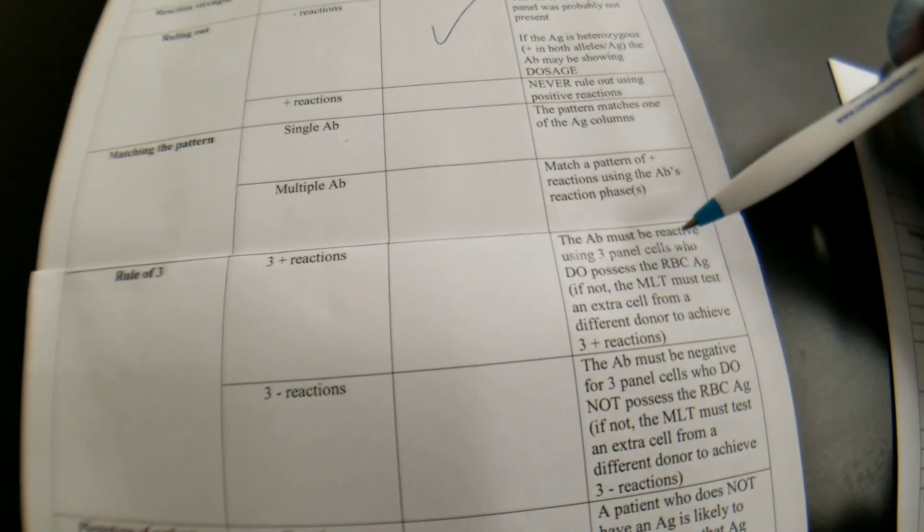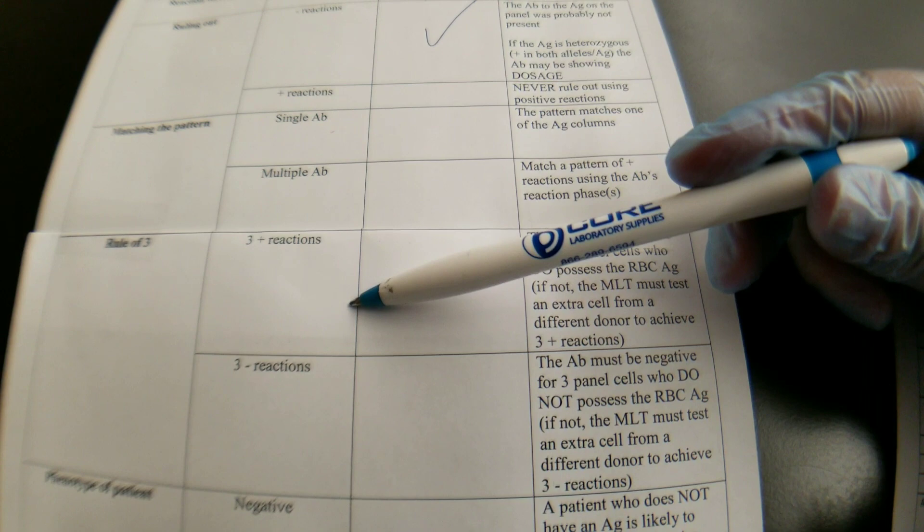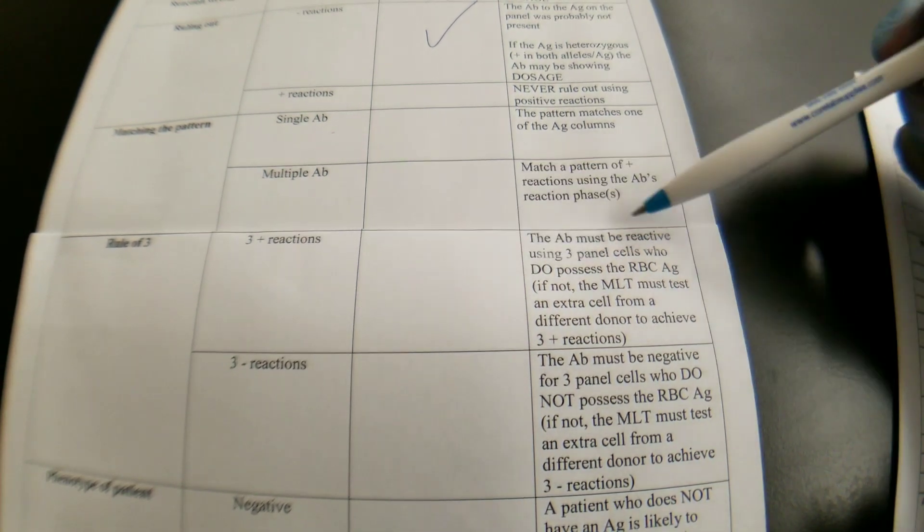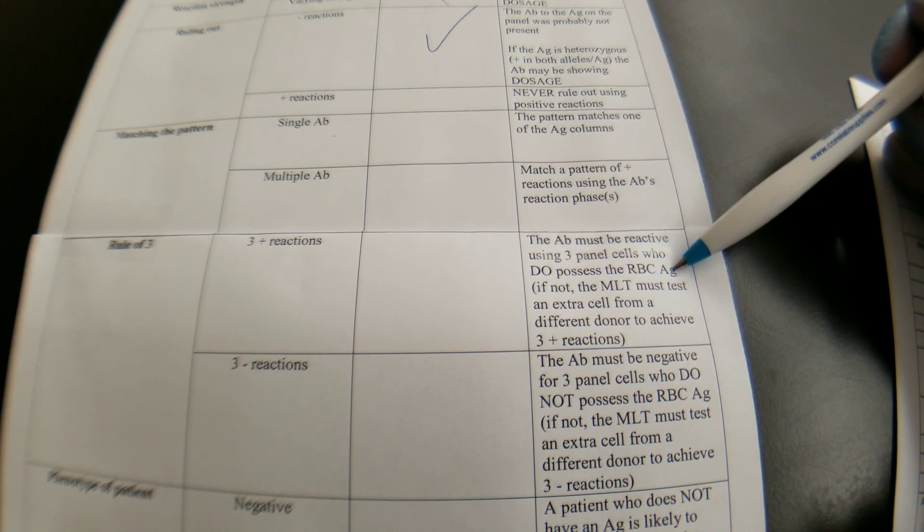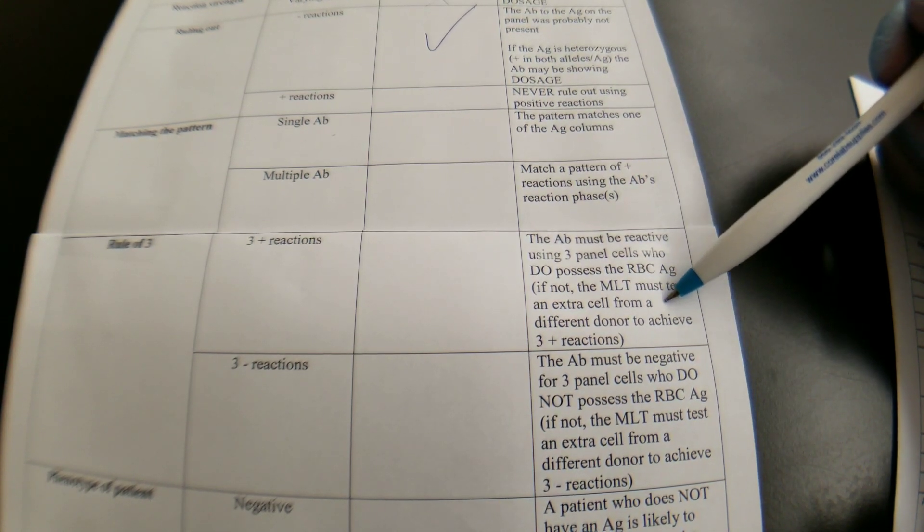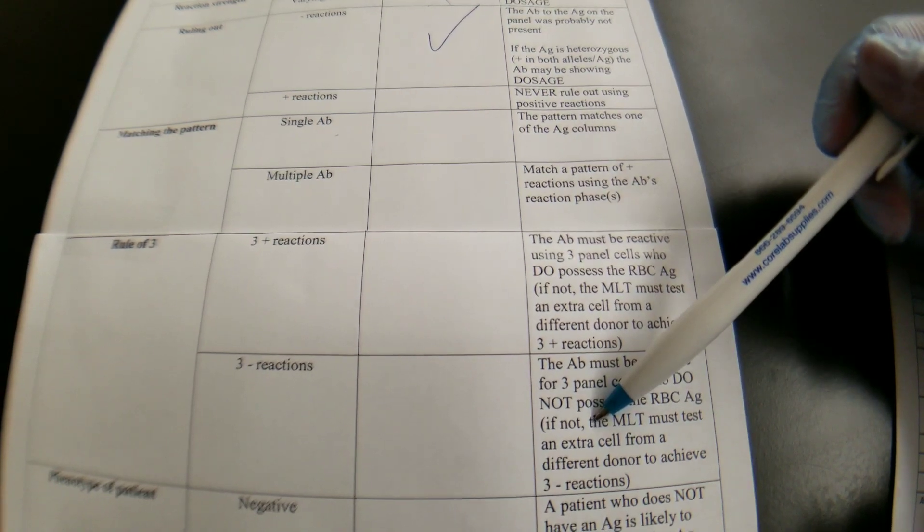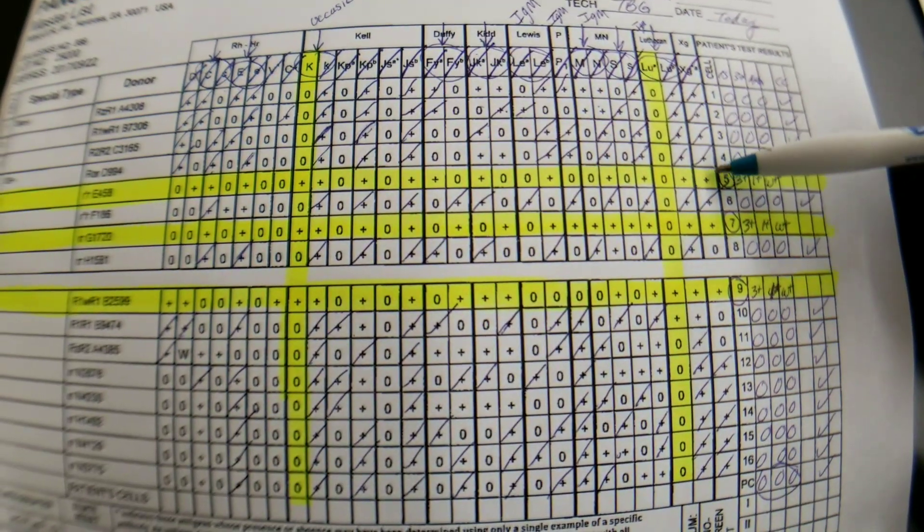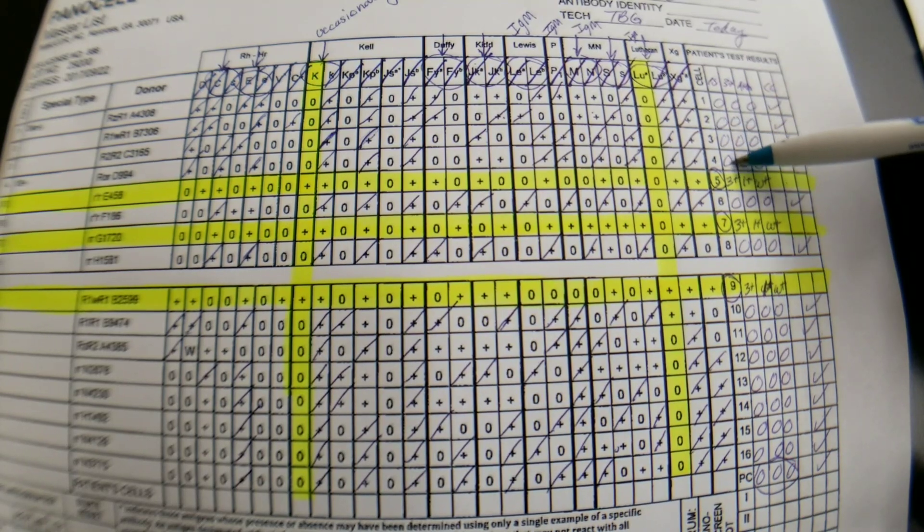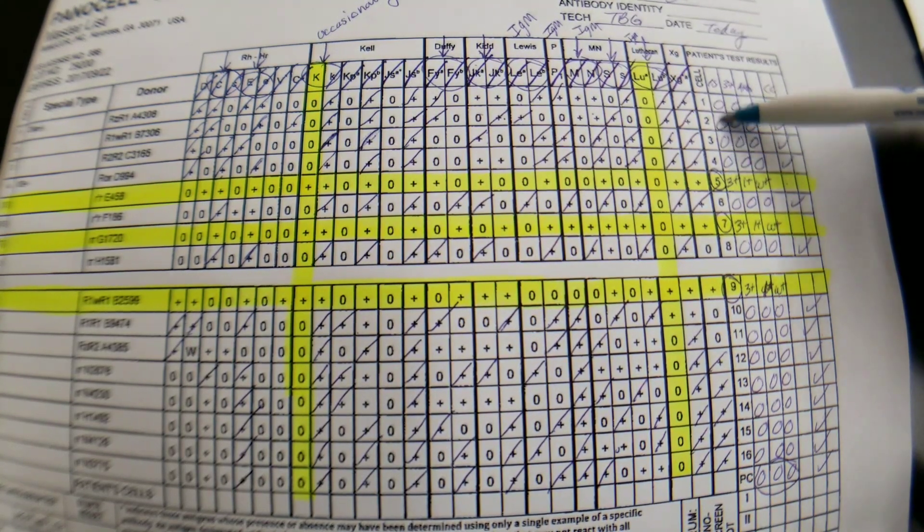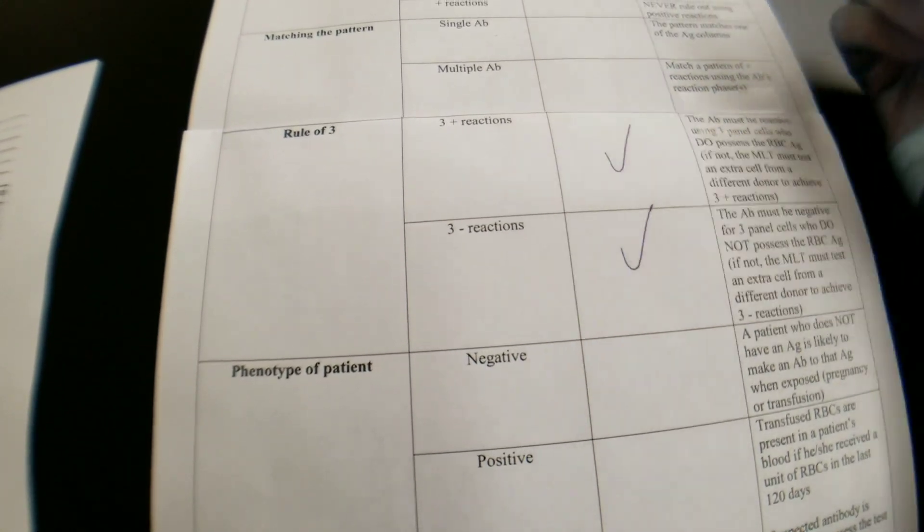Okay, so the rule of three means that, it's written here, that you need to have three positive reactions that the antigen is present in. Okay, so if you read that here, it says the antibody must be reactive using three panel cells who do possess the RBC antigen. If not, the tech must test an extra cell from a different donor to achieve those three positives. And the same thing for the three negatives. Okay, so how many positives do we have? We have three positives. So that's fantastic. And we also have three negatives. Okay, so we do meet that already. Okay, so we can check those off.